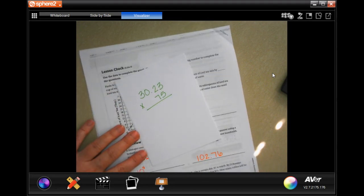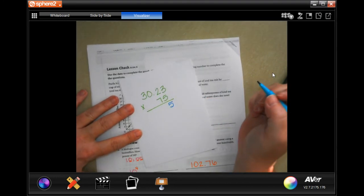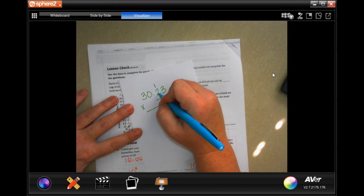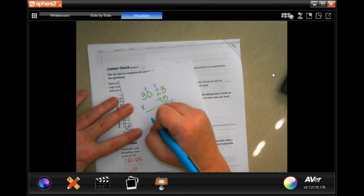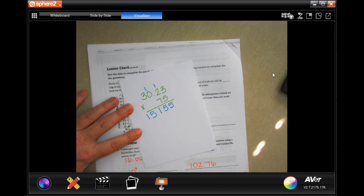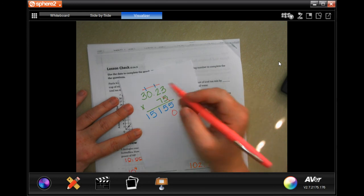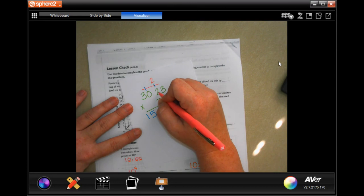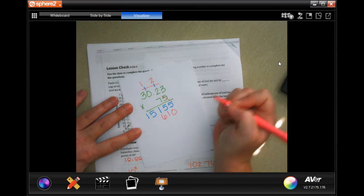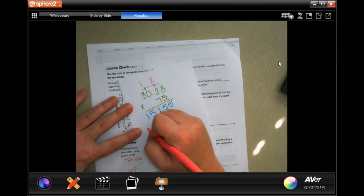Five times three is fifteen, carry the one. Five times two is ten, plus one is fifteen, carry the one. Five times zero is zero, plus one is one. Five times three is fifteen. We're going to do tic-tac-toe. Seven times three is twenty-one, carry the two. Seven times two is fourteen, plus two is sixteen, carry the one. Seven times zero is zero, plus one is one. Seven times three is twenty-one.